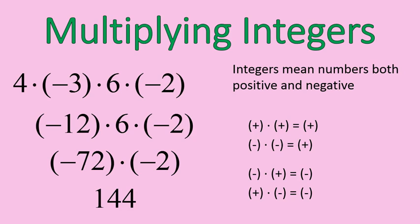That is basically what you do for multiplying integers. A shortcut you might notice: count the number of negatives you're multiplying — there's 1 and there's 2. If it's an even number of negatives, the result is positive. If it's an odd number of negatives, you'll end up with a negative answer.